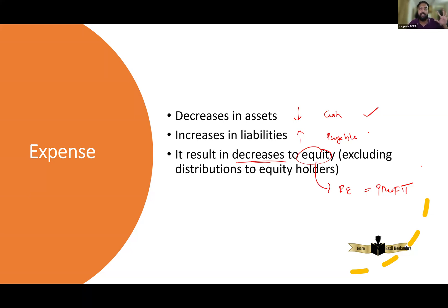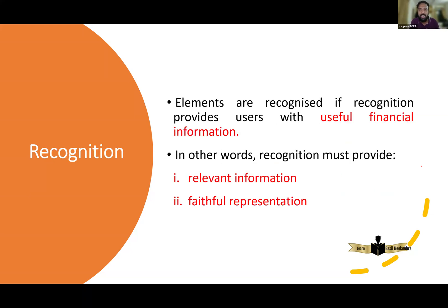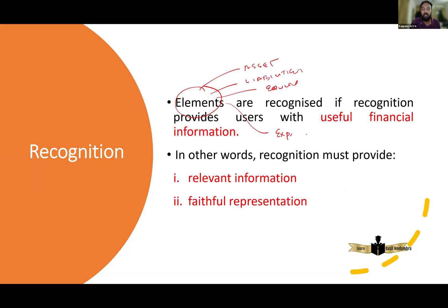Now let's learn when these elements are recognized and when these elements are de-recognized. The five elements are asset, liability, equity, expense, and income. So when will you recognize an asset? When will you recognize a liability? When will you recognize an equity, an expense, or an income? Very simple — there are three criteria.